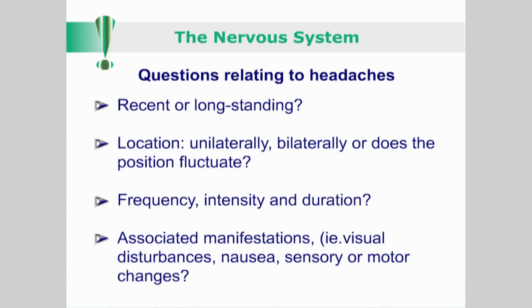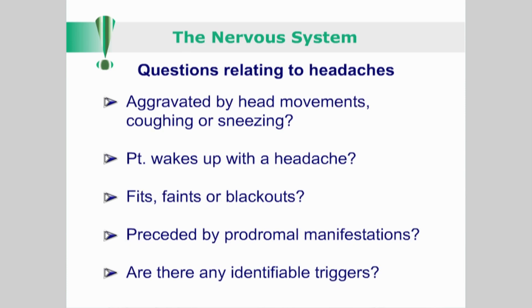Here are some key questions to consider when investigating a suspect neurological presentation. If the patient complains of headaches, ask: are the headaches a recent phenomenon or long-standing? Are they localized unilaterally, bilaterally, or does their position fluctuate? What is the frequency, intensity and duration? Are there any associated manifestations such as visual disturbances, nausea, or sensory or motor changes? Is the headache aggravated by head movements, coughing or sneezing?